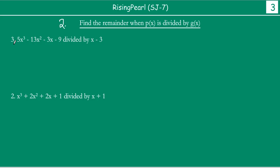This is example four. So what we will do is go ahead and apply the remainder theorem. So this is our polynomial. We are dividing this by x minus 3. We need to find out the value of the polynomial at x equal to 3.